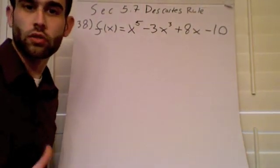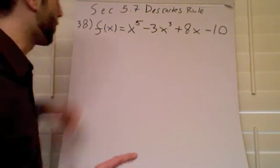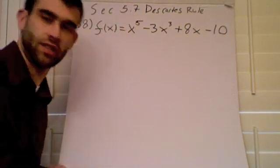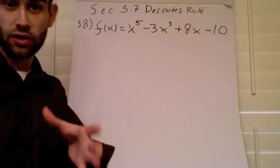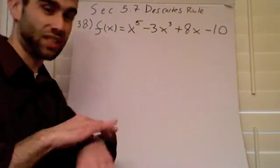What I want to do is have a quick review of Descartes' Rule of Signs. This was on section 5.7, and it was on problems 37 to 39.